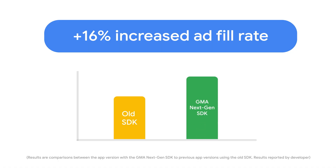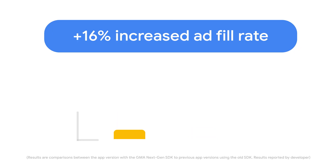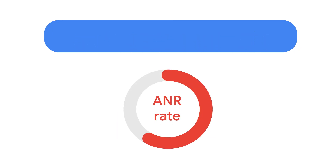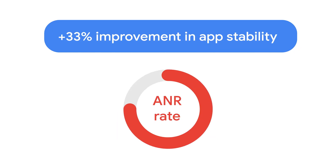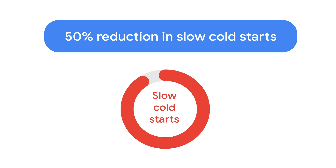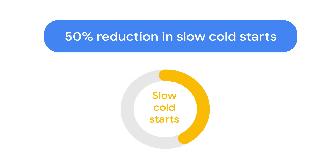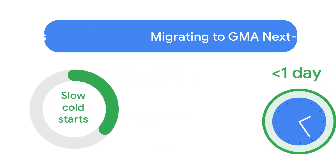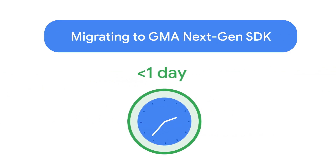A mobile game developer who made the switch saw a one-third reduction in ANR rate and a 50% reduction in slow cold starts. And migrating from the previous SDK to the new one took them less than one day.